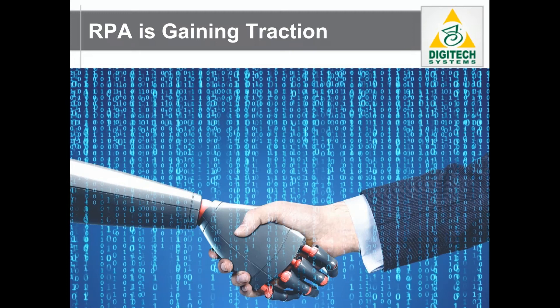Have you heard the hype about robotic process automation, or RPA? It's a hot topic among companies looking to automate core business processes in order to improve efficiency, boost accuracy and control of information for security and compliance, and to save money on business costs. Common components associated with the technology include process automation, digitization, robot-controlled user accounts, workflow, rules-based process flow, and structured data.